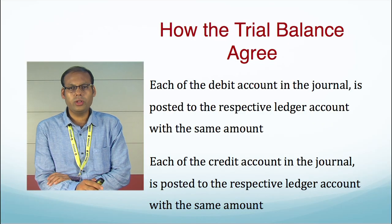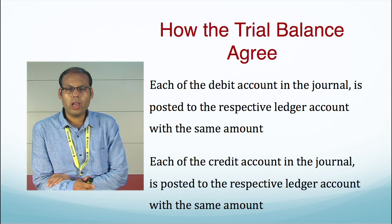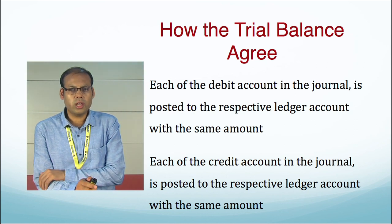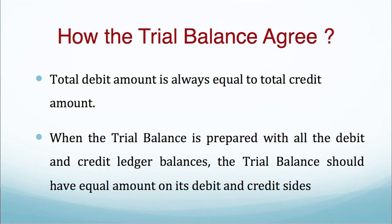Each debit account in the journal is posted to the respective ledger account in the ledger book with the same amount. For the furniture account, we will have one particular account in the ledger book; for the purchase account, another account in the ledger book; and we will also record the opposite entries in the cash book. Each credit account in the journal will also be posted to the respective ledger accounts with the same amount. So both the debit and credit accounts have been posted with the same amount, meaning total debit amount is always equal to total credit amount.